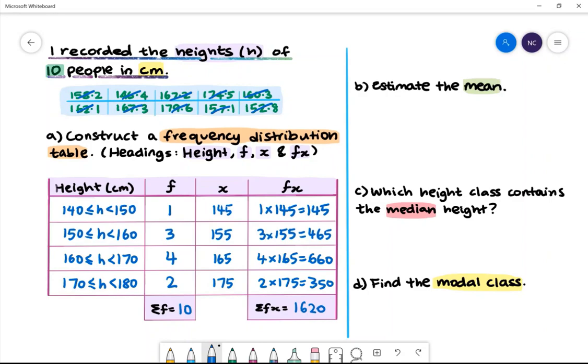Part B: Estimate the mean. The mean will be given by the sum of fx divided by the sum of f. The sum of fx is 1620. The sum of f is 10. Therefore, the mean will be 162 centimeters.